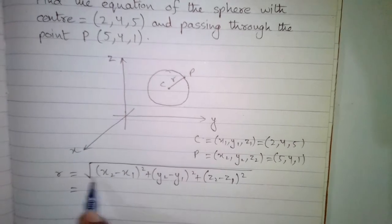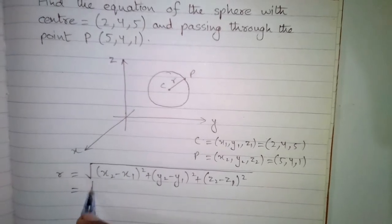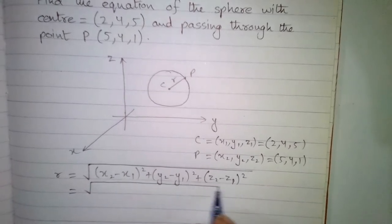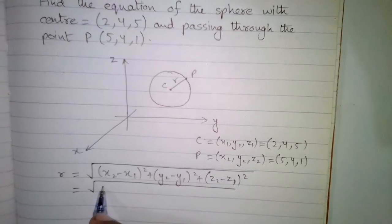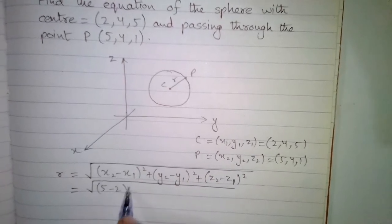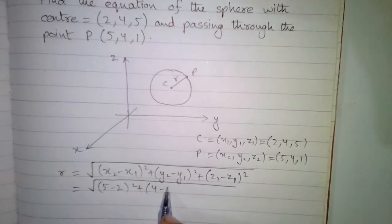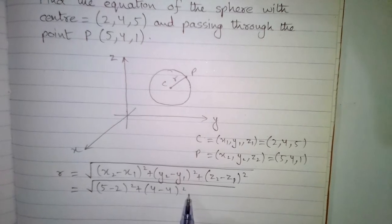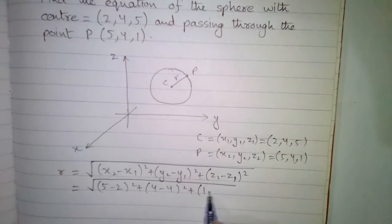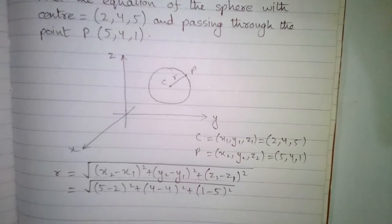So we have the square root of (5 minus 2) whole square plus (4 minus 4) whole square plus (1 minus 5) whole square.